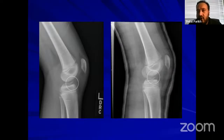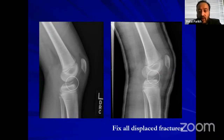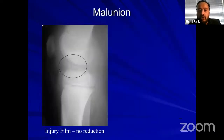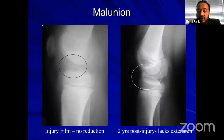The second reason for not casting this patient is the risk of arthrofibrosis — I want rigid fixation and early movement. I fix all displaced fractures and don't attempt closed reduction. If you don't fix this, the patient can have a malunion and will lack extension because the fragment causes impingement in the notch. Here is a case two years post-injury treated elsewhere — this is not acceptable.